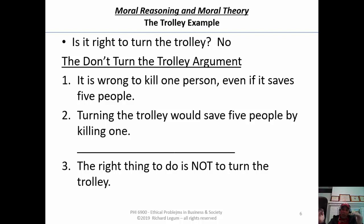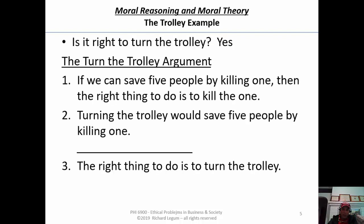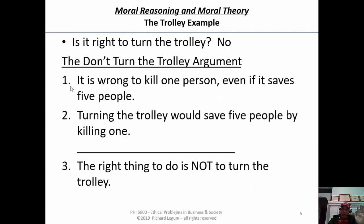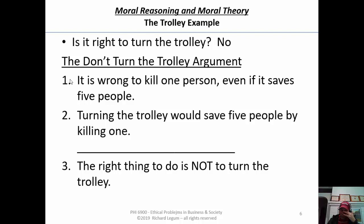So far, the question is: we had a moral principle in the first argument — if we can save five people by killing one, then the right thing to do is to kill one. To get the right answer in the trolley example, we have to decide: is that moral principle correct, or is this one correct — it is wrong to kill one innocent person, even if it saves five? The majority opinion in the trolley example was that the right thing to do is to turn the trolley, so they thought the first argument was sound and this one is not sound.